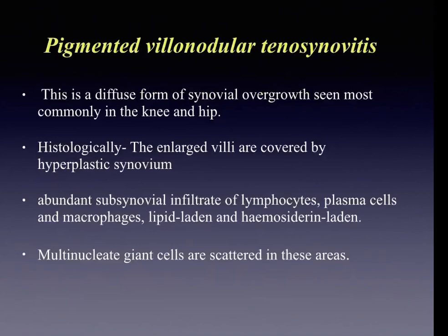Pigmented villonodular tenosynovitis is the diffuse form of the same entity with synovial overgrowth, commonly seen in knee and hip. Histologically, it shows enlarged villi covered by hyperplastic synovium with abundant chronic inflammatory infiltrate; macrophages can be lipid and hemosiderin laden, and multinucleated giant cells are scattered among these cells.